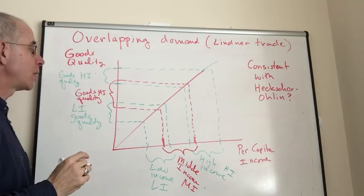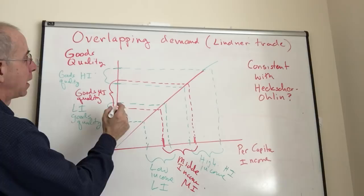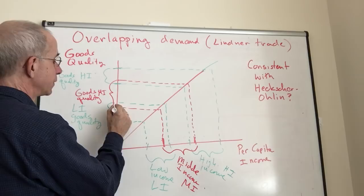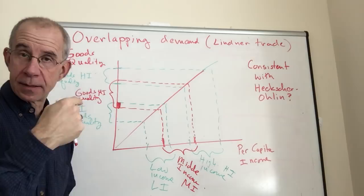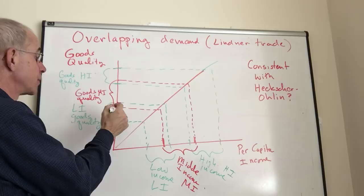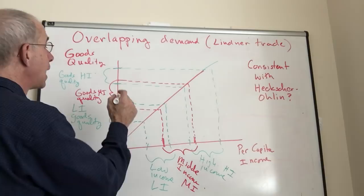What you see is that there's a range of products the middle income country produces that overlaps with what the low income country demands and vice versa. So the low income country is producing goods that might be of potential interest to the middle income country.